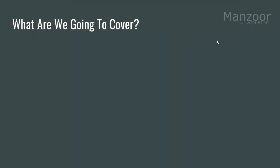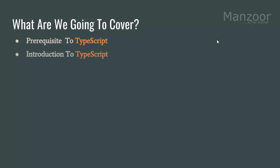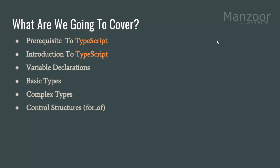What are we going to cover in this course? We will see the prerequisite to TypeScript — that means what things you need to know to get into this course. Then we will give an introduction to TypeScript: why do I need TypeScript and what is TypeScript. We will see various types of declarations, then basic types, complex types, and data types. We will also see a new control structure — the for-of loop.